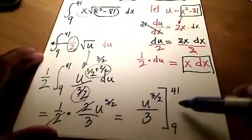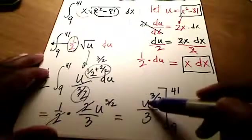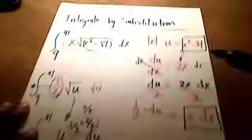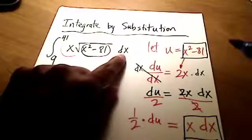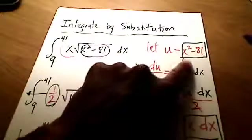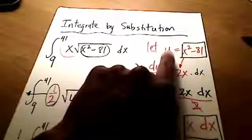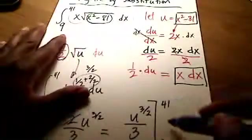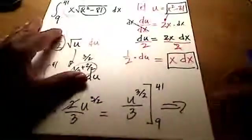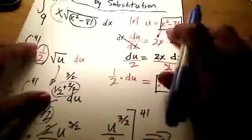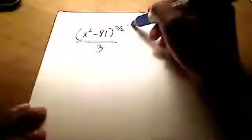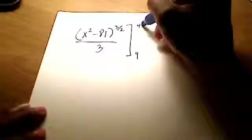And that is being evaluated between 9 and 41. Except that there's one problem with this. Yeah, I hope you see it. Look, this is in terms of u. But the original problem wanted the integral in terms of x. So I need to take this x squared minus 81 and put it back in place of u. In fact, I'm running out of room, so I'm going to do that on the next side here. In place of u, I'm going to put in the x squared minus 81. So here's what I've got. I've got x squared minus 81 raised to the 3 halves all over 3 being evaluated between 9 and 41.